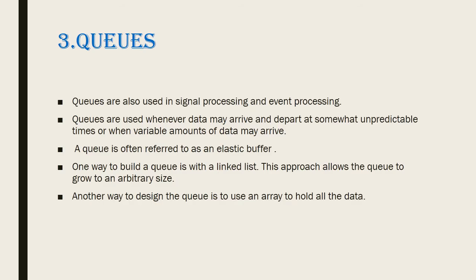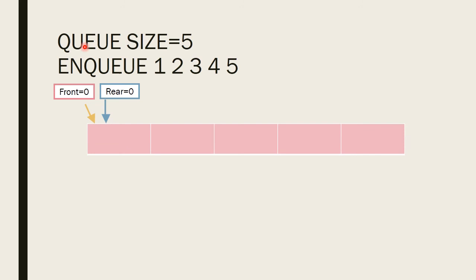The third component is the Queue. Queues are used in signal processing as well as event processing. The Queue is also referred to as a buffer, but it is an elastic buffer — we can change the size of the Queue depending upon the data arriving. Consider a Queue of size 5, meaning at a time we can store 5 data items.